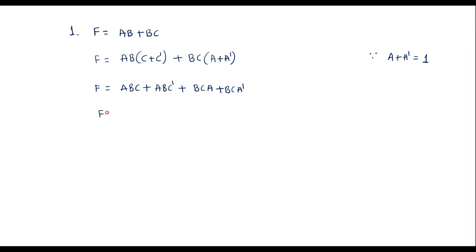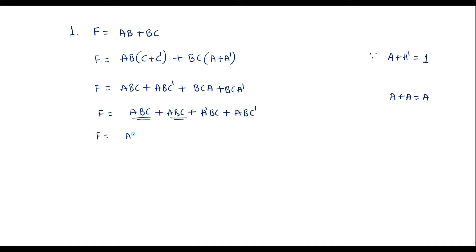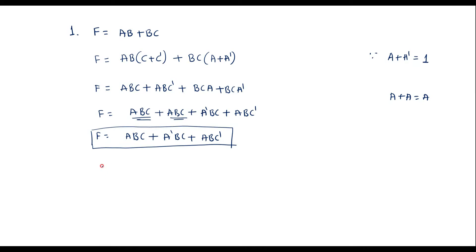Expanding further: f is equal to abc plus abc plus abc dash plus abcdash. Now we have two terms abc appearing. We know that a plus a is always equal to a, so these two product terms can be replaced by only one. Therefore: f is equal to abc plus a dash bc plus abc dash. This is the standard SOP form.